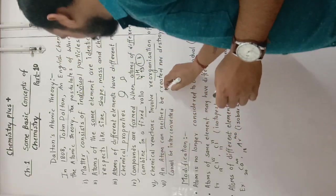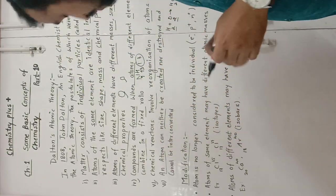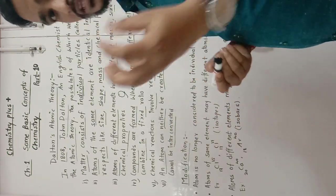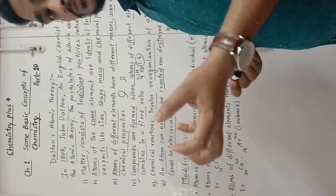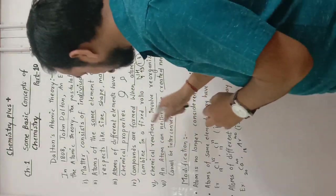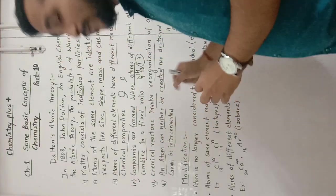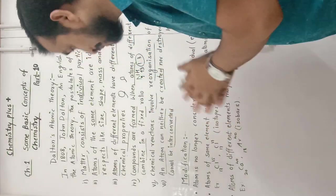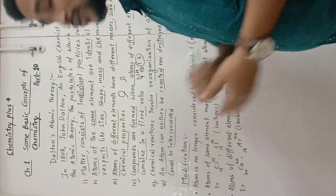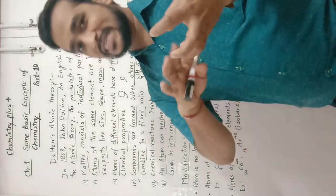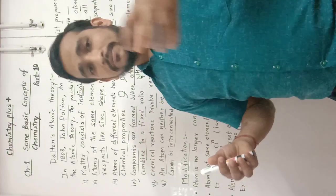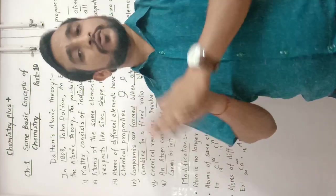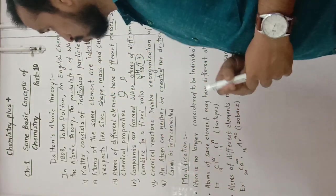The sixth and last postulate of Dalton's atomic theory is: an atom can neither be created nor destroyed, and cannot be interconverted. The atom — the smallest particle of any matter — can neither be created nor destroyed, as we also studied in the law of conservation of mass. It cannot be interconverted, but it can combine with another atom to form new compounds.